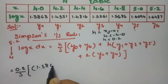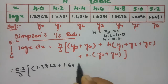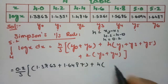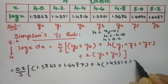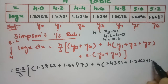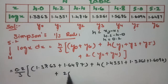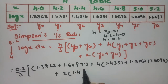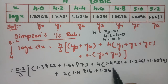y0 is 1.3863, and the last ordinate yn is 1.6487. The odd ordinates are: y1 = 1.4351, y3 = 1.5261, y5 = 1.6094. The even ordinates are: y2 = 1.4816 and y4 = 1.5686.